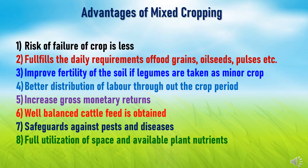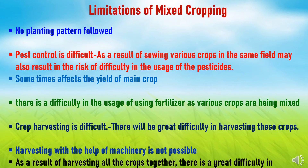Farmers can gain income based on the combination of crops. There is well-balanced cattle feed available because of mixed cropping, as different types of crop residue are available to feed animals. Mixed cropping also acts as a safeguard against pests and diseases, since the combination of various crops reduces pest attacks compared to a single specific crop. There is also full utilization of space and available plant nutrients, due to dense plant population and no specific row or plant spacing — space is properly utilized and added fertilizers are absorbed by the crops.